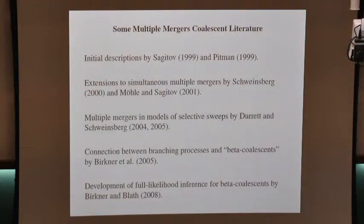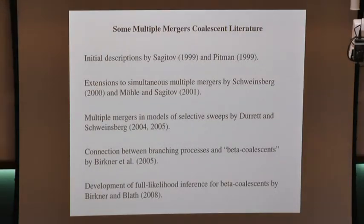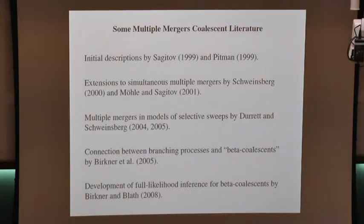The basic idea is that even in a very large population, the variance of the offspring number could be big — comparable — so that a single individual could have a number of offspring on the same order as the population size.